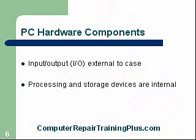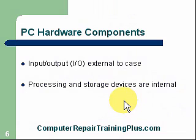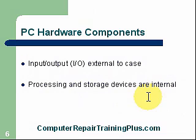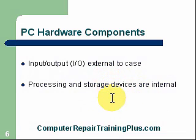PC hardware components. We have input and output devices — I/O — which are external to the case. Processing and storage devices are internal. So we have a CPU, hard drive, and other components internal to the case. Externally, we have keyboards, monitors, and other devices.